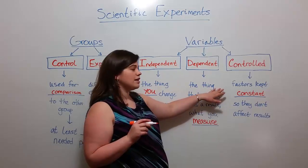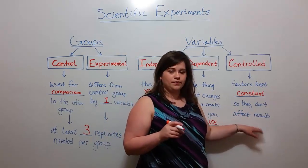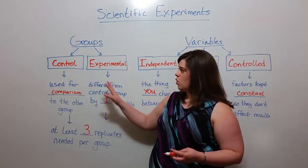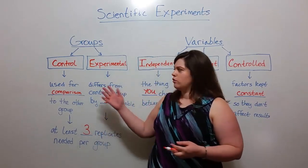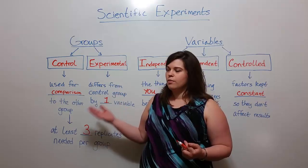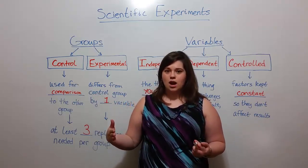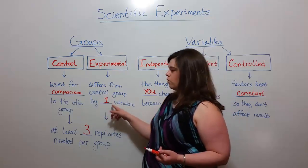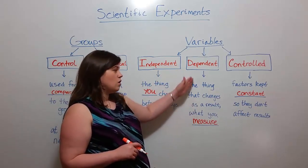These are factors in the experiment that are kept constant between the two groups so that they don't affect the results. In our example of different kinds of plant growth conditions — whether natural light for the control group or purple wavelength light for the experimental group — the controlled factors would be things like the amount of water, the type of soil, the length of experiment, and the number of hours per day that the plants were in either of the lighting conditions. These are factors kept constant and the same for both groups, so that the only difference between those groups is the one variable — the independent variable — so that you can measure what changes as a result, that being the dependent variable.